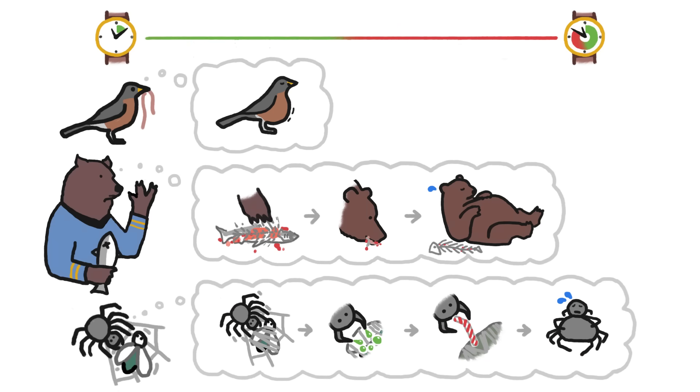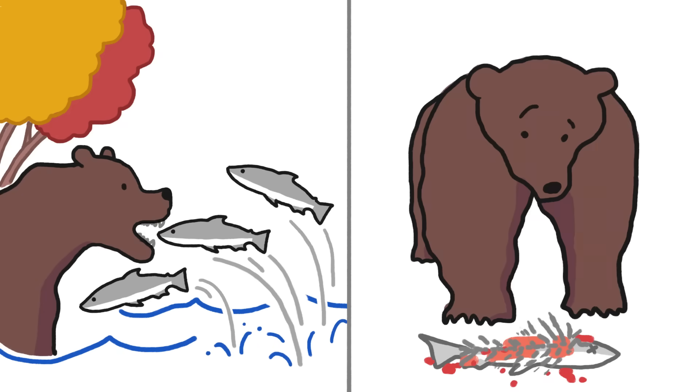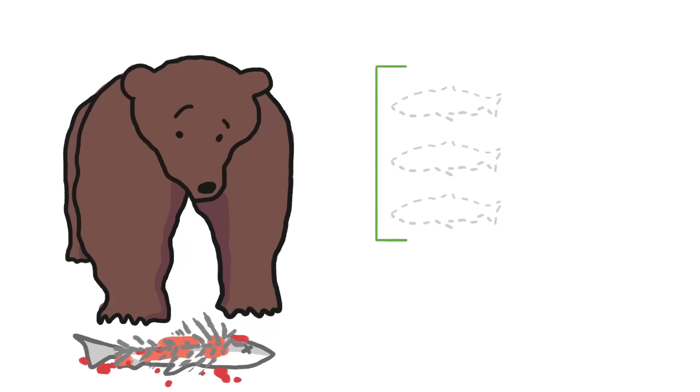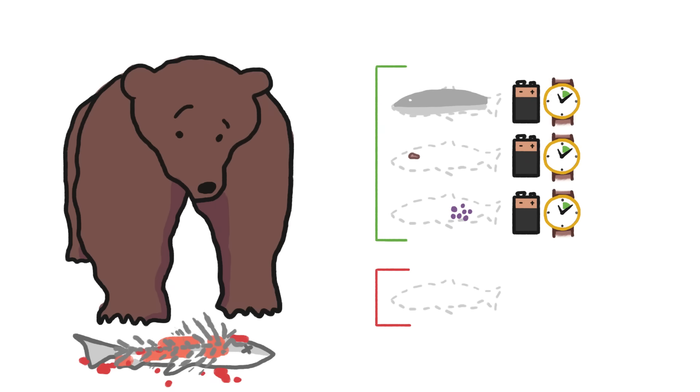For a bear in salmon season, fish is easy to come by. Dismantling that fish is what takes the real time and energy. Some parts of a salmon are more worthwhile than others. The fattiest bits of the fish—the skin, the brain, and the eggs—are the most calorie-rich and easiest to access.